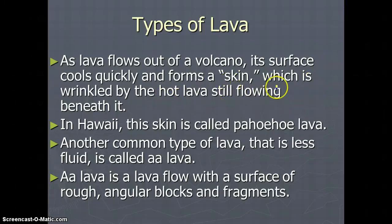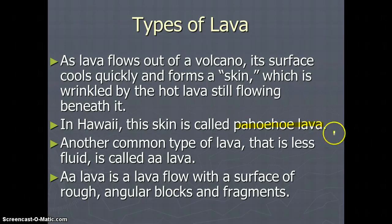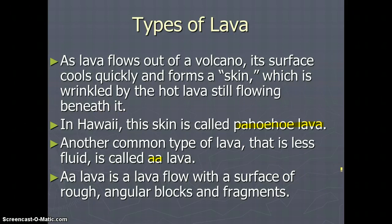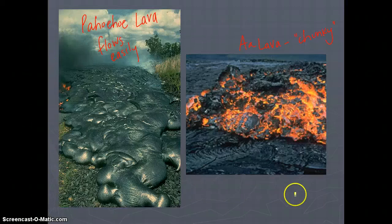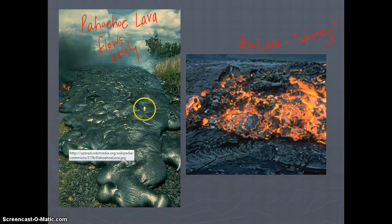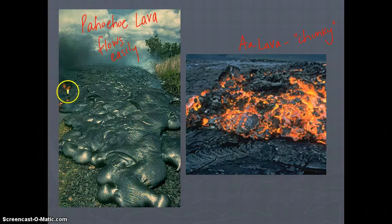In Hawaii, this runny lava that cools on top is called pahoehoe lava — it's a Hawaiian term. Another type of lava that's less fluid is called a-a lava, pronounced 'a-a,' also a Hawaiian term. A-a lava is a lava flow with a surface of rough, angular blocks and fragments — this lava does not flow very easily. You can see the ropey skin of pahoehoe still very hot underneath, setting fire to the pavement, while a-a lava appears chunky with a much higher viscosity and doesn't flow as easily.